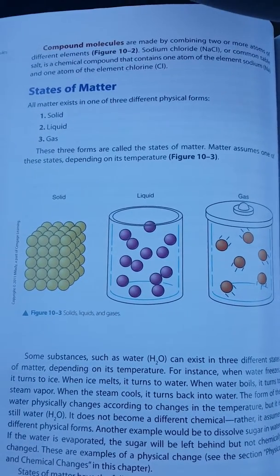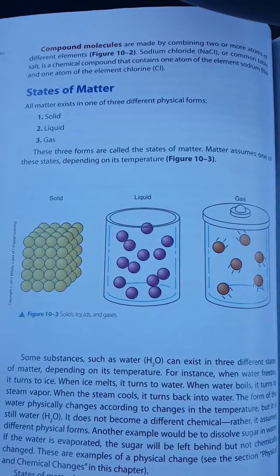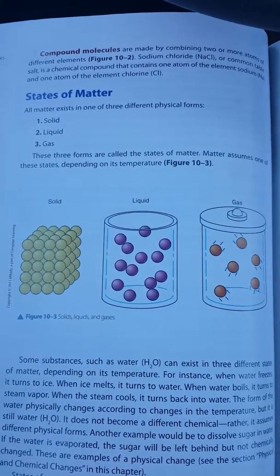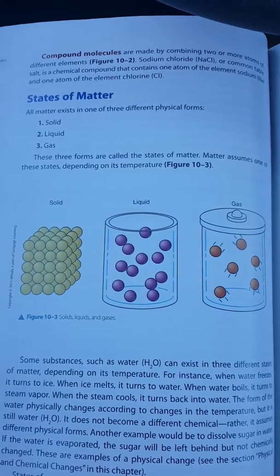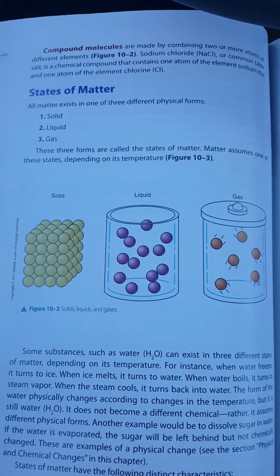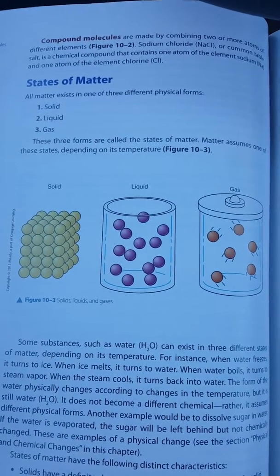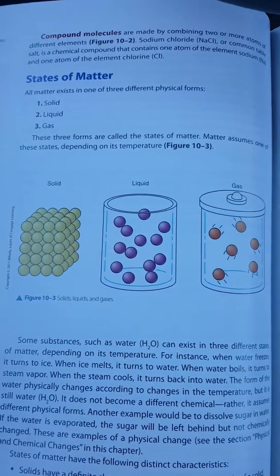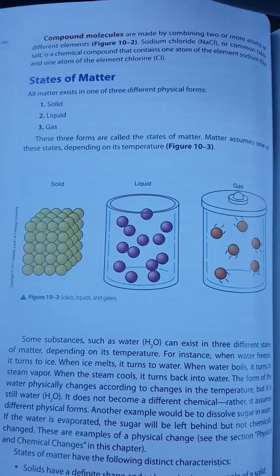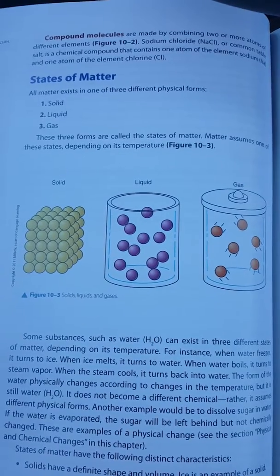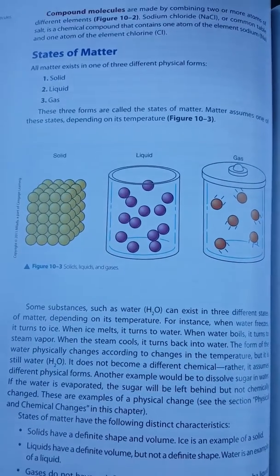States of matter. All matter exists in one of three different physical forms: solid, liquid, gas. These three forms are called the states of matter. Matter assumes one of these states depending on its temperature.